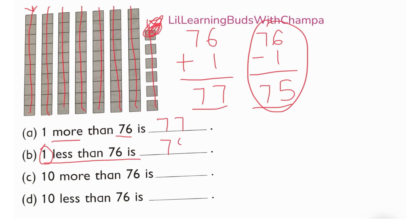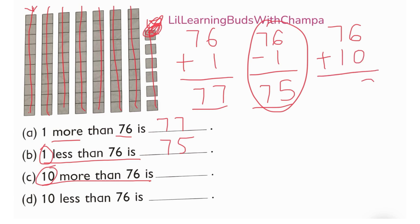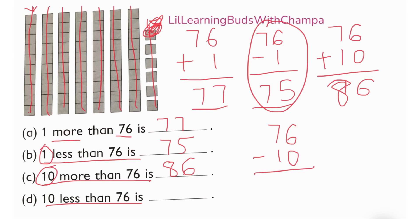Next: 10 more than 76. 'More than' — what operation is it, addition or subtraction? Addition! How much do you have to add? 10. So add 10 to 76 — the answer is 86. And 10 less than 76: 'less than' is subtraction, so take away 10 from 76 and you will get 66.